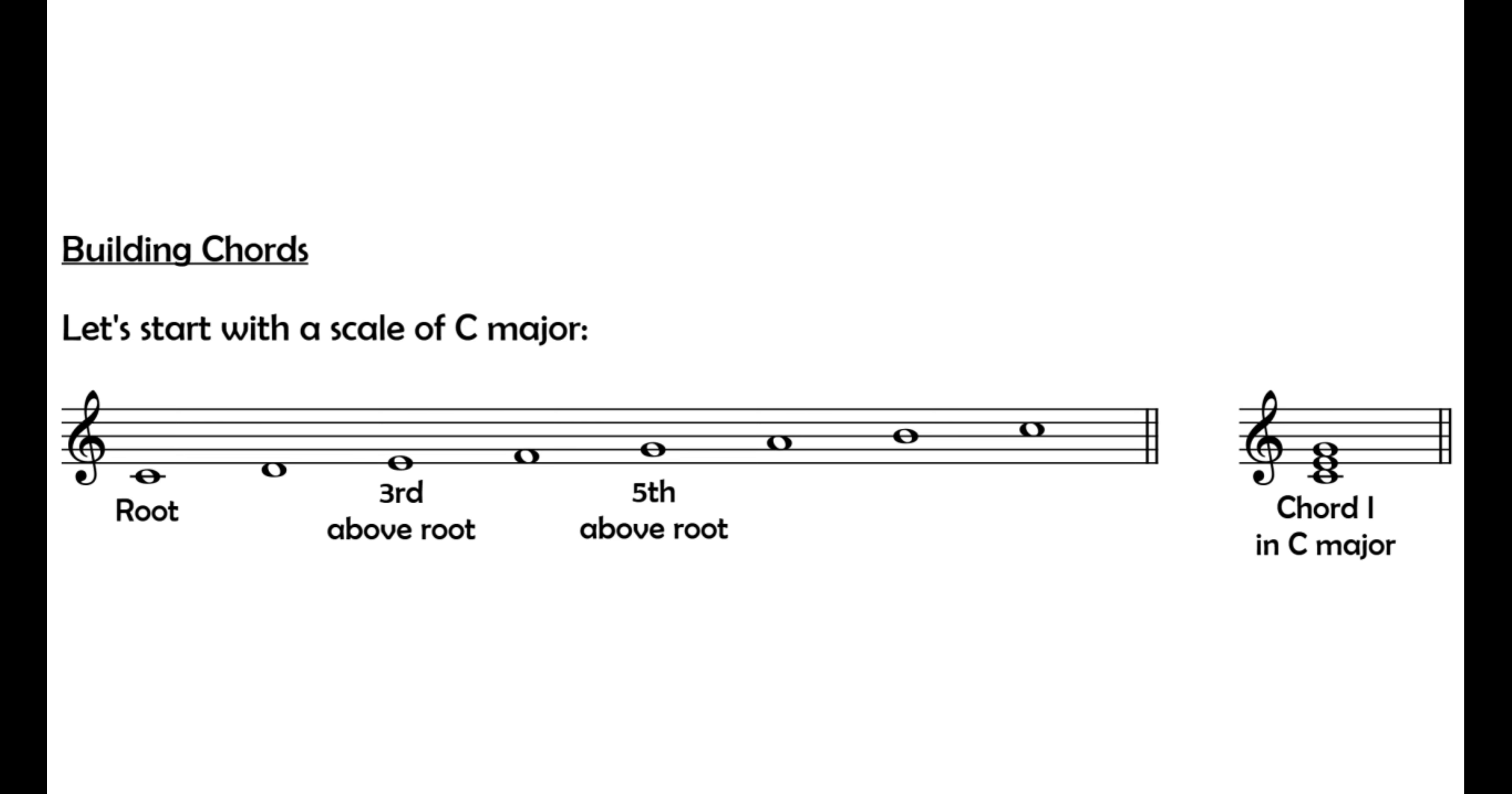Part 6 of the book is all about chords. A triad is a chord which contains three notes – the root, the third and the fifth. If the root is the first note of the scale of the key, then these three notes are called chord I.